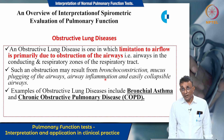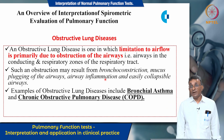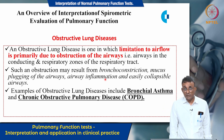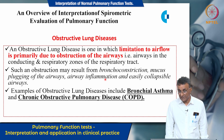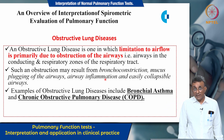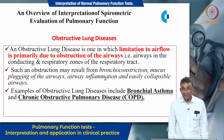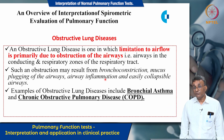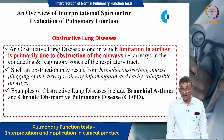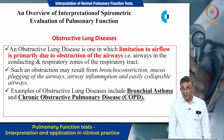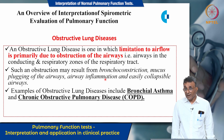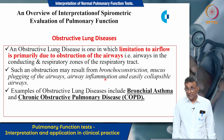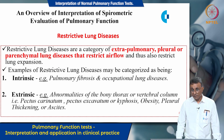This slide gives you an overview of obstructive lung diseases. An obstructive lung disease is one in which limitation to airflow is primarily due to obstruction in the airways — both in the conducting and respiratory zones. Such obstruction may be due to bronchoconstriction, mucous plugging, airway inflammation, and easily collapsible airways. Examples include bronchial asthma and chronic obstructive pulmonary disease (COPD).